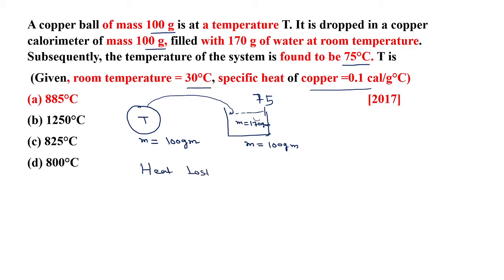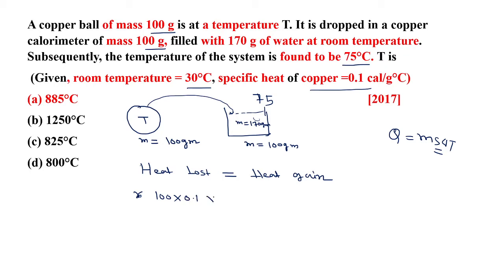The copper ball is losing heat. The formula for heat lost or gained is Q = m × s × ΔT. The mass of the copper ball is 100 gram, the specific heat of copper is 0.1, and the change in temperature is t minus 75, since it started at t and comes to 75 degree centigrade. So heat lost = 100 × 0.1 × (t − 75).